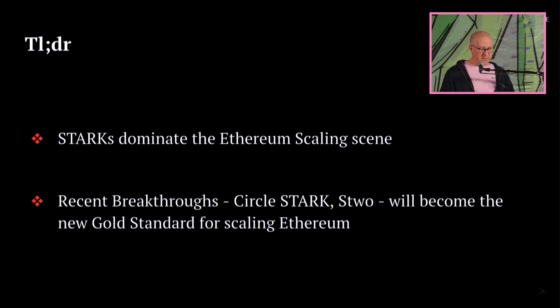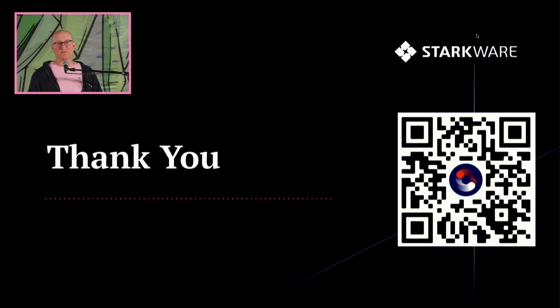So I'll repeat the TLDR. Starks dominate the Ethereum scaling scene already today, with more and more teams moving over to using FRI-based systems that are safer but also more efficient. And the recent breakthroughs of Circle Stark and Stu will become the new gold standard for scaling Ethereum. Not just at Starknet, probably also Polygon Zero, and other teams are going to adapt to them, and then we'll see a lot more in the industry. This is as good a time as ever. It's the second best time to start looking into Starknet and Cairo. The first best time was probably a year ago, but still, we're early enough in the game. So you can take this QR code, follow the links, join the ecosystem. Thank you very much.